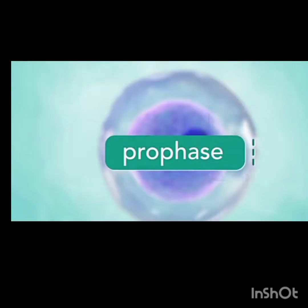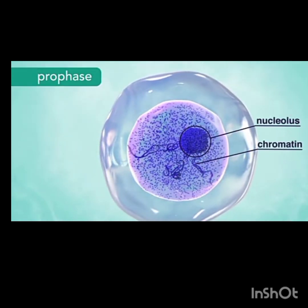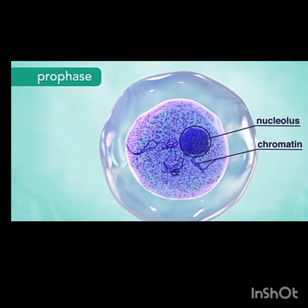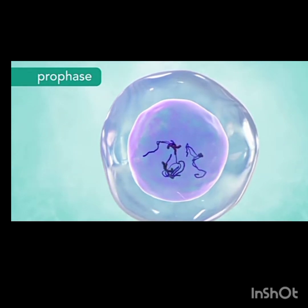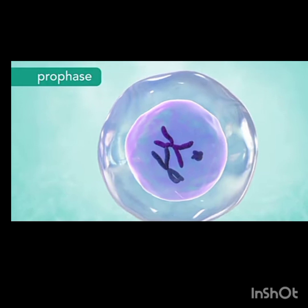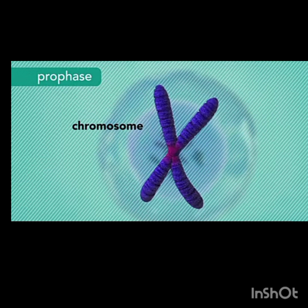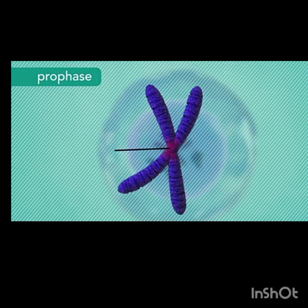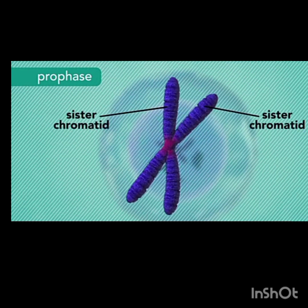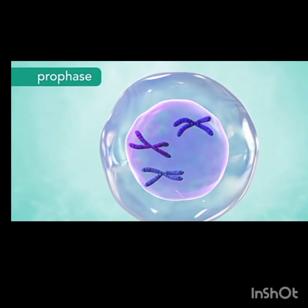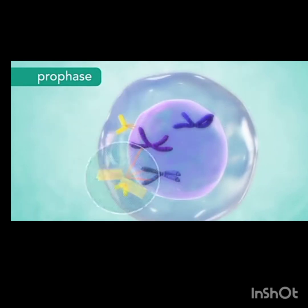In prophase, the chromatin threads condense — they get thickened and form chromosomes. These chromosomes are attached together by a centromere, and on either side of the centromere are sister chromatids, together making one chromosome unit.